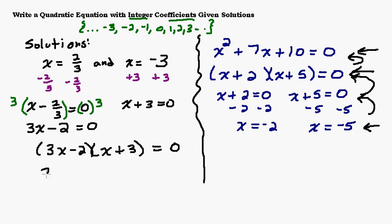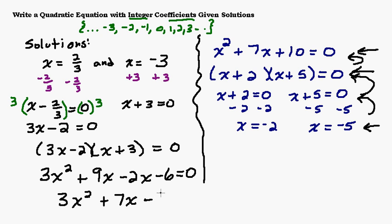So we get 3x times x, 3x times 3, negative 2 times x, and negative 2 times 3. And then we can combine our like terms. And we have a quadratic equation right here.